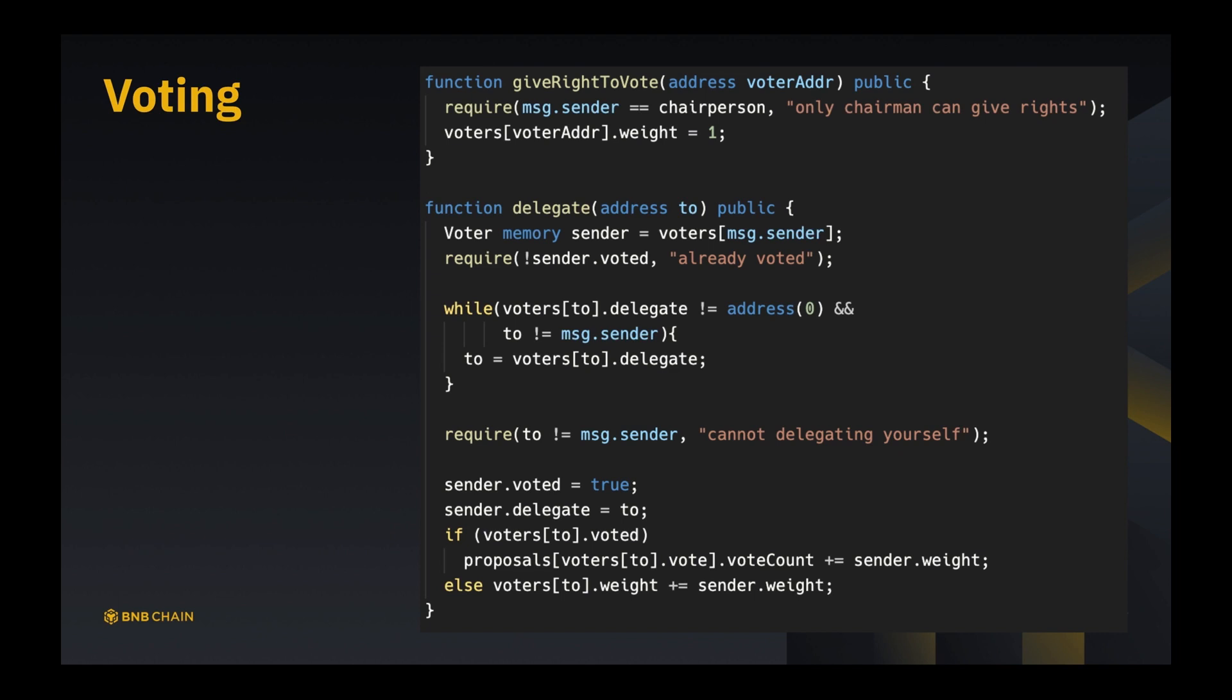The next function is an interesting part of this contract called delegate. We have an address to, but we have no address from because the address from is going to be message.sender. First we find the voter instance of message.sender, so we have voter memory sender is going to be voters[message.sender]. We will require sender hasn't voted, otherwise we say you already voted and you can't pick a delegate.